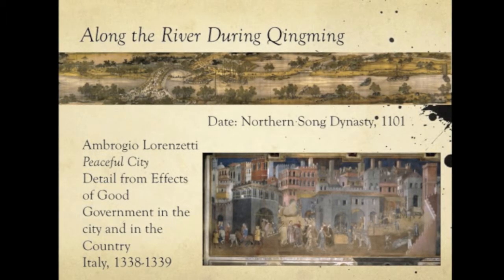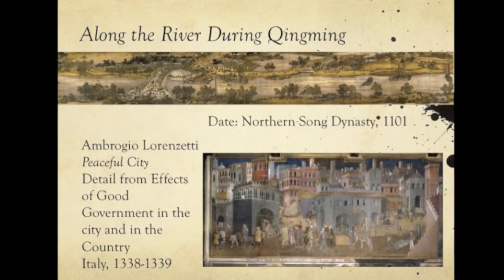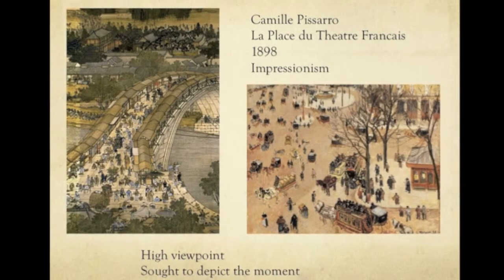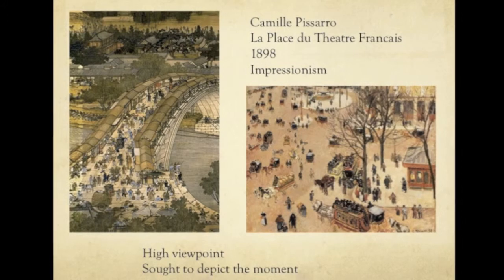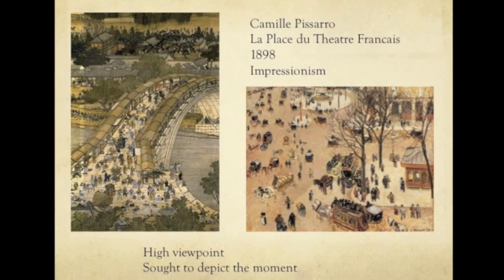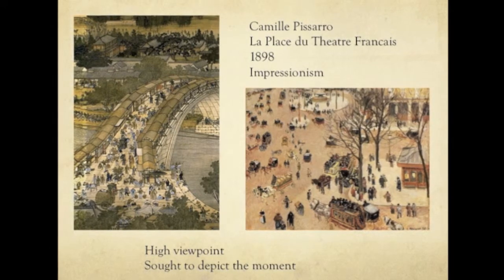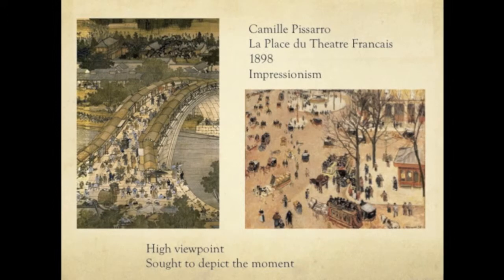This piece can be compared to Ambrogio Lorenzetti's peaceful city fresco, which served as an allegory of good government in the Sienese Republic — the same concept applies to Along the River During Qingming. Part of the painting also reminds me of an Impressionist painting by Pissarro: both are viewed from a perspective above ground level and both depict a scene at a moment. But the Chinese painter focused on the scene, while the Impressionist painter focused on the moment.